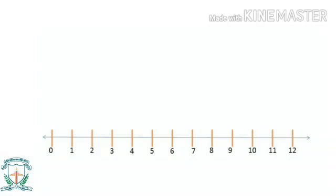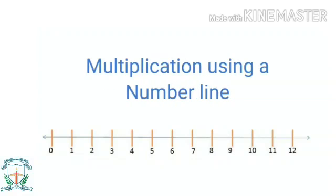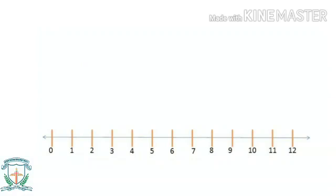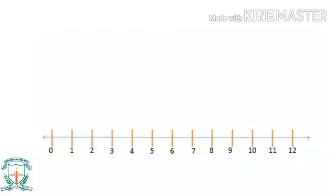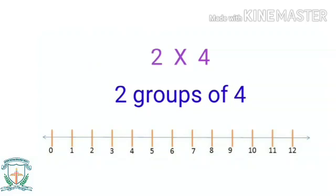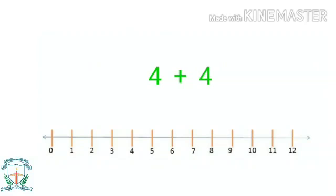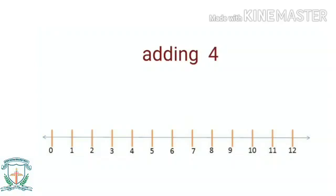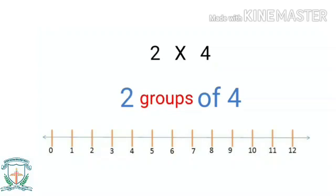The next topic is multiplication on a number line. Let us understand multiplication using a number line. Let us take an example: two multiplied by four. Here, two multiplied by four means two groups of four — that is, four plus four. We are adding four two times. Two groups of four means two jumps of four. The groups become the jumps on a number line.